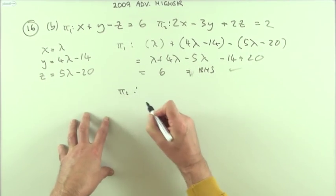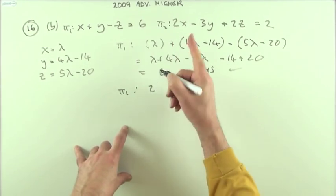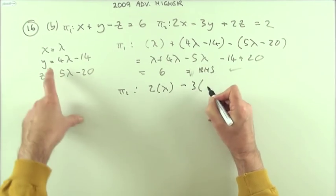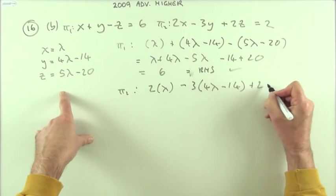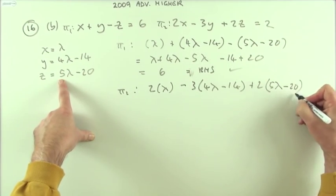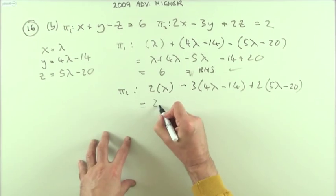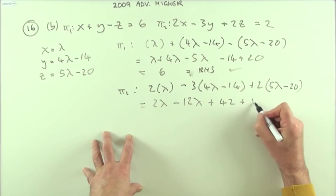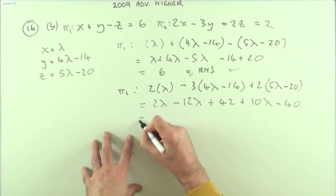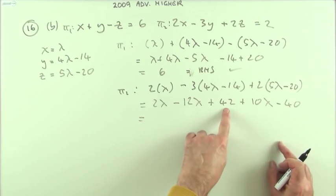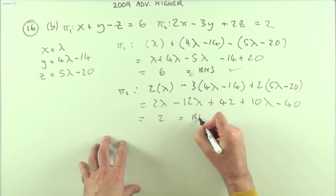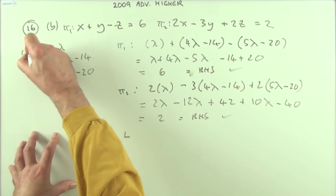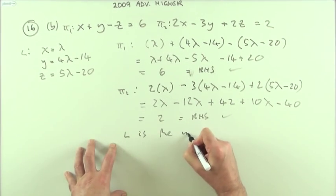Does the line also fit plane two? Substituting x equals lambda, y equals four lambda minus 14, z equals five lambda minus 20: we get lambda minus three times four lambda minus 14 plus two times five lambda minus 20. Collecting terms: 12 take away 12 cancel, and 42 take away 40 gives 2, which equals the right-hand side. So the line fits plane two as well, confirming L is the intersection of the two planes.